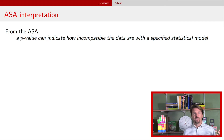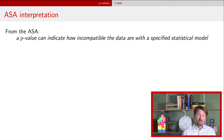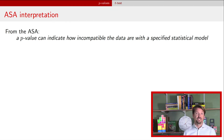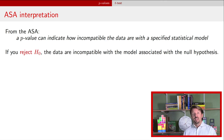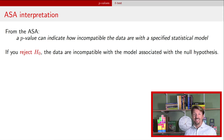So what does rejecting the null actually mean? The American Statistical Association says a p-value can tell you how incompatible the data are with a specified statistical model. In our case, that specified statistical model is the model associated with the null hypothesis. If we decide to reject the null, we're saying the data are incompatible with the model associated with that null hypothesis.